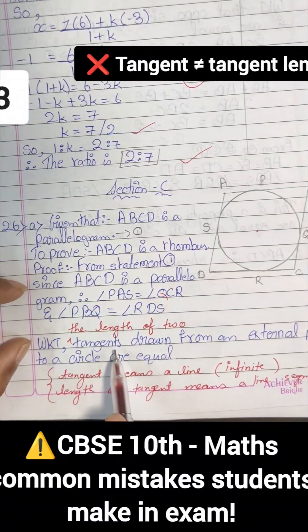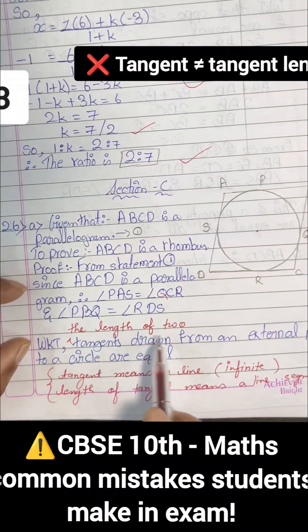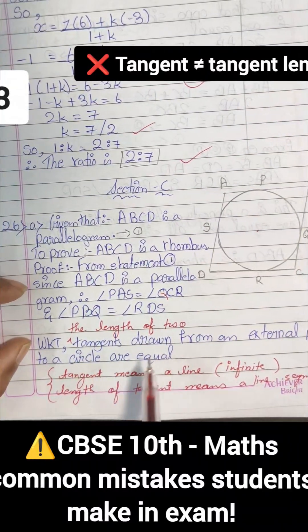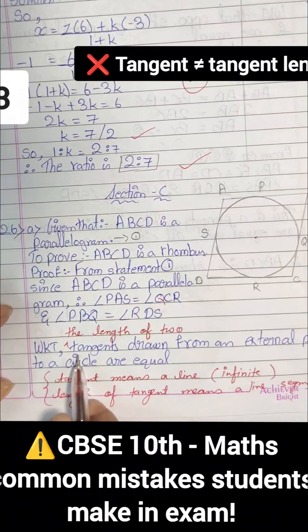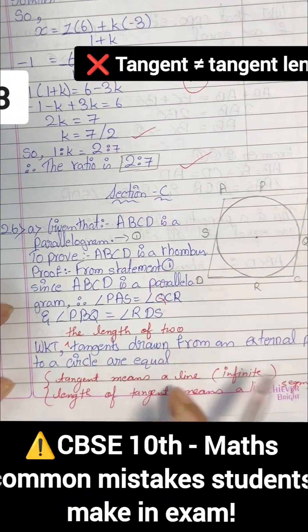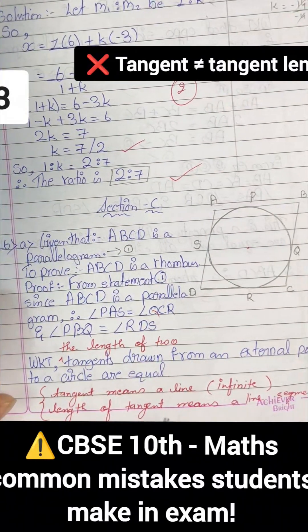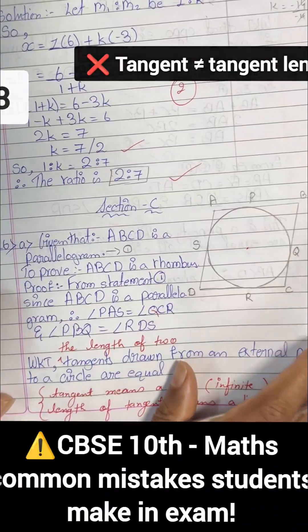The length of two tangents are finite line segments, so this statement makes sense that the length of two tangents are equal. Make sure that you are clear about the term tangent and the term length of tangents. Tangent is a line. On the other hand, length of tangents means it's a line segment.